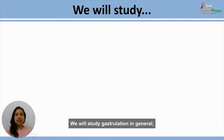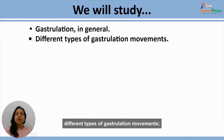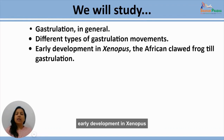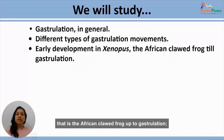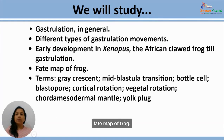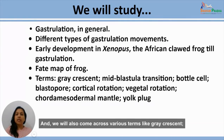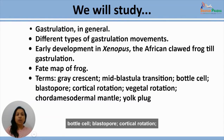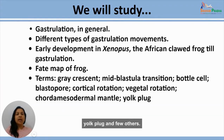We will study gastrulation in general, different types of gastrulation movements, early development in Xenopus — that is the African clawed frog — up to gastrulation, fate map of frog, and we will also come across various terms like mid-blastula transition, blastopore, cortical rotation, vegetal rotation, the archenteron mantle, yolk plug, and a few others.